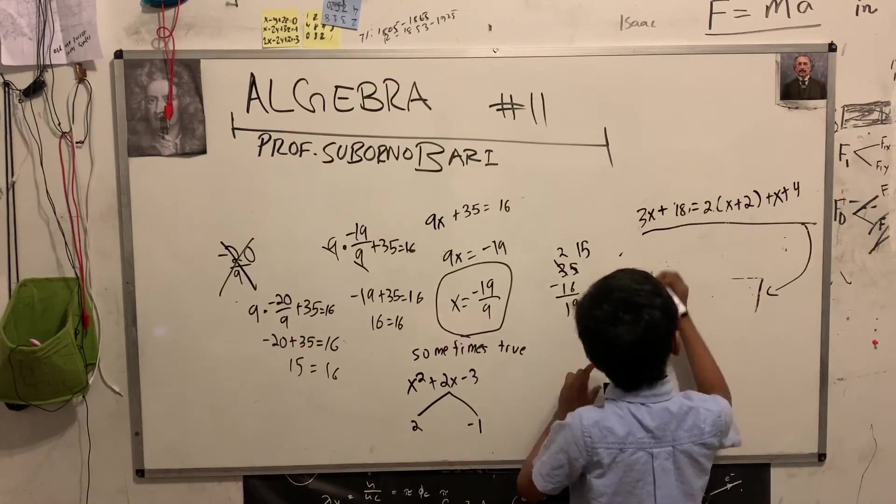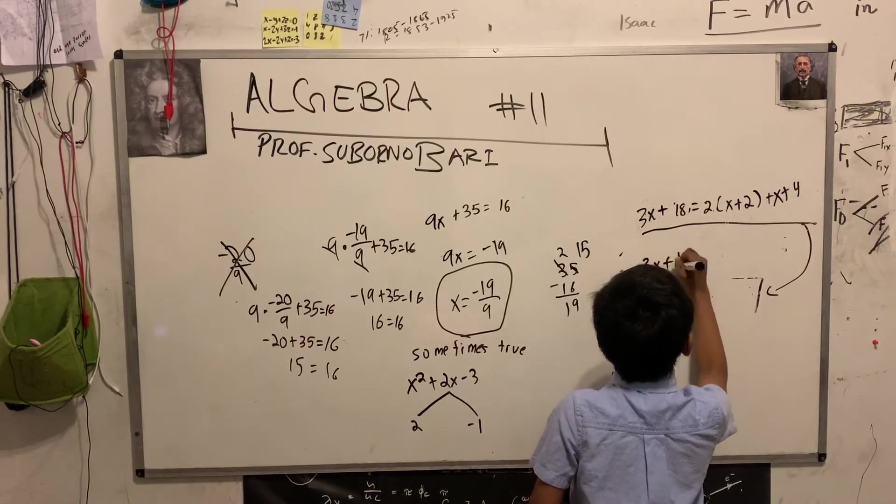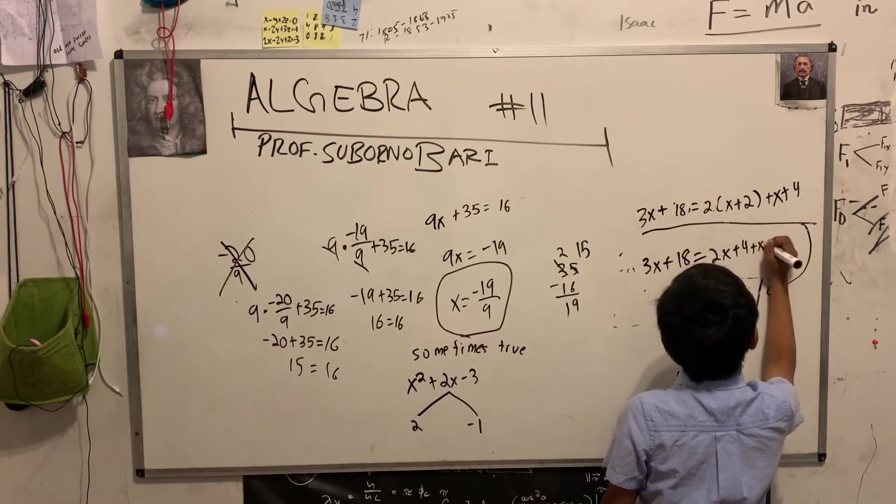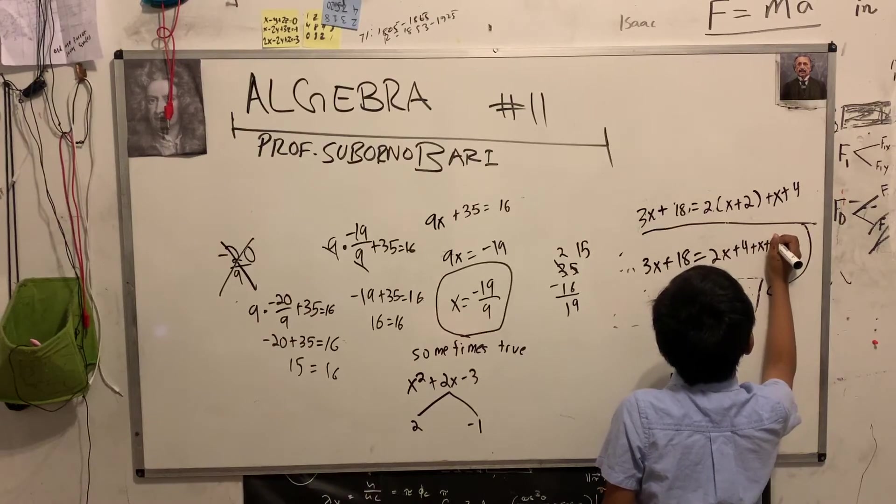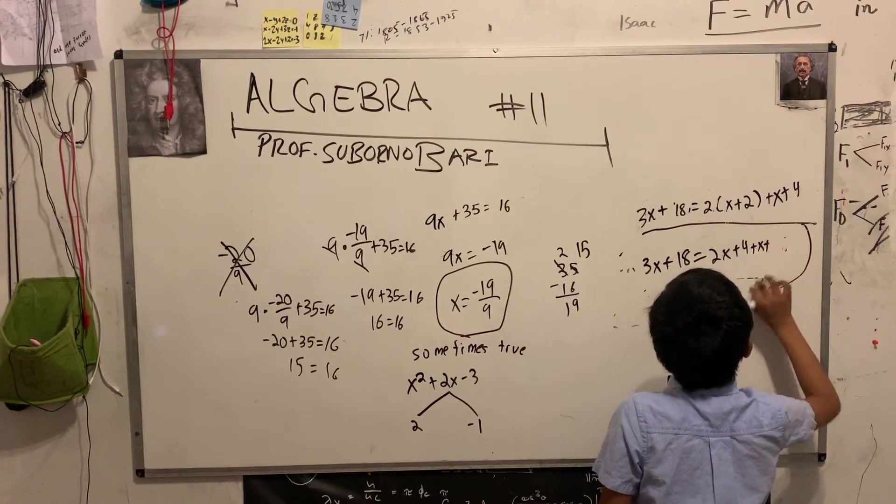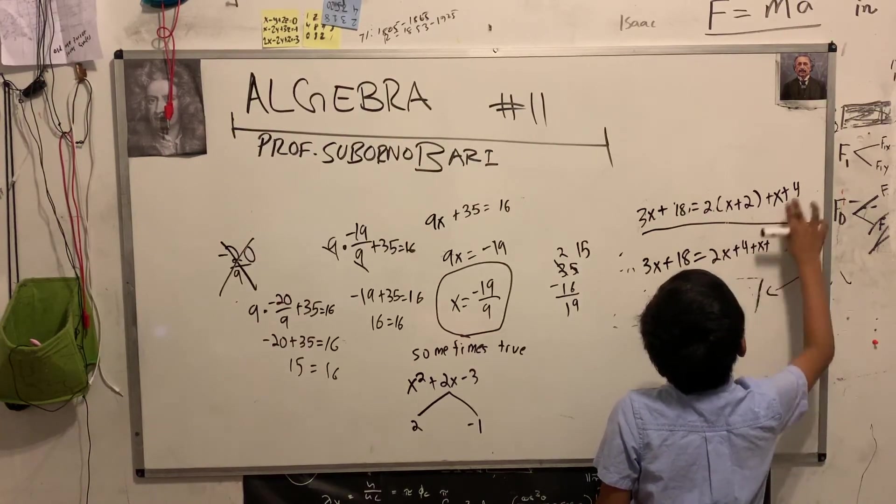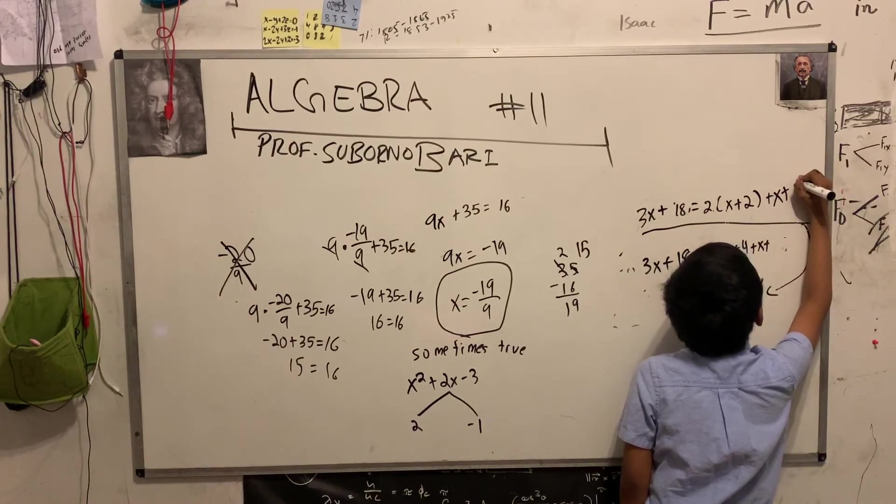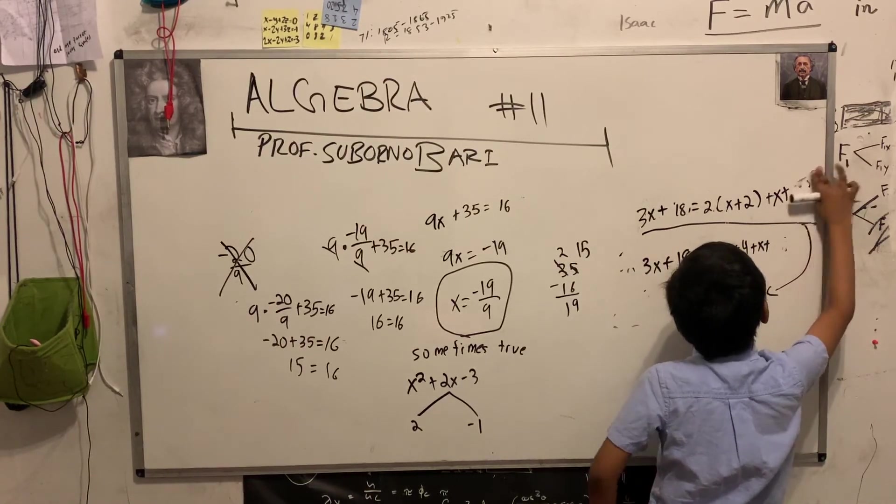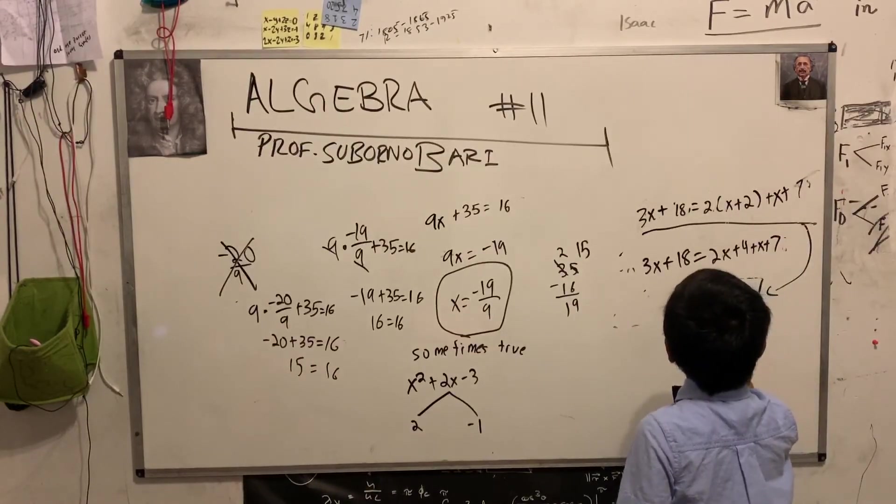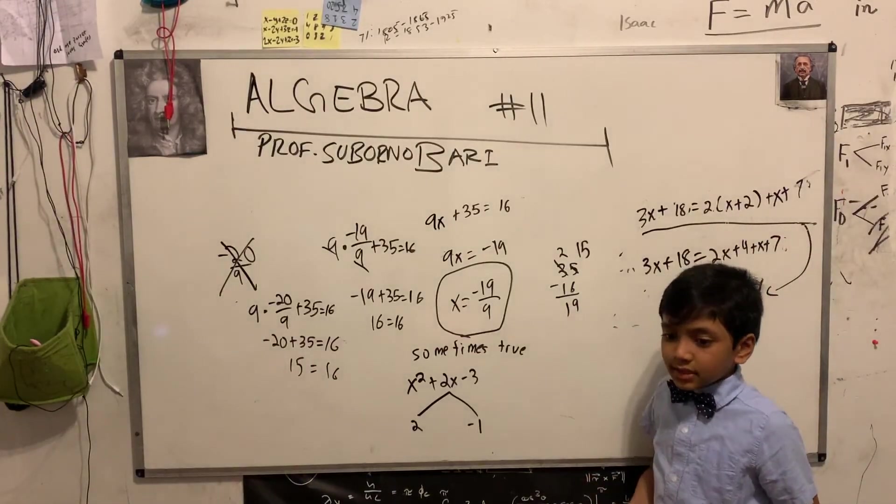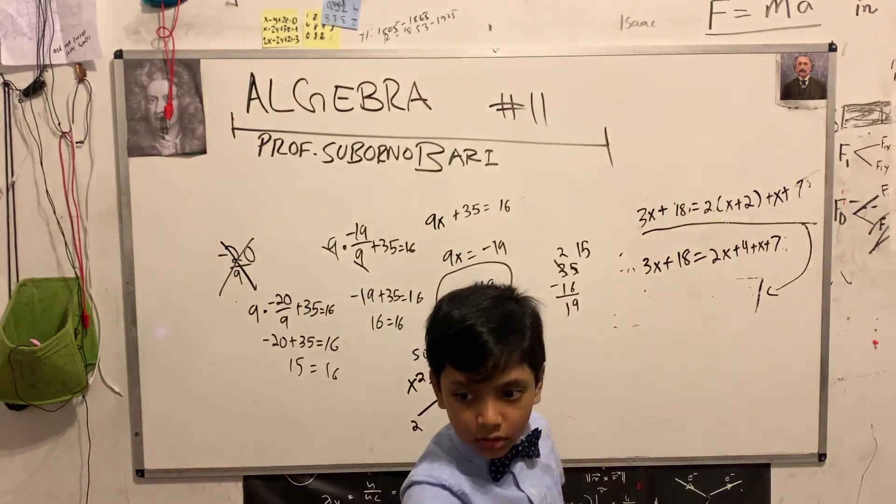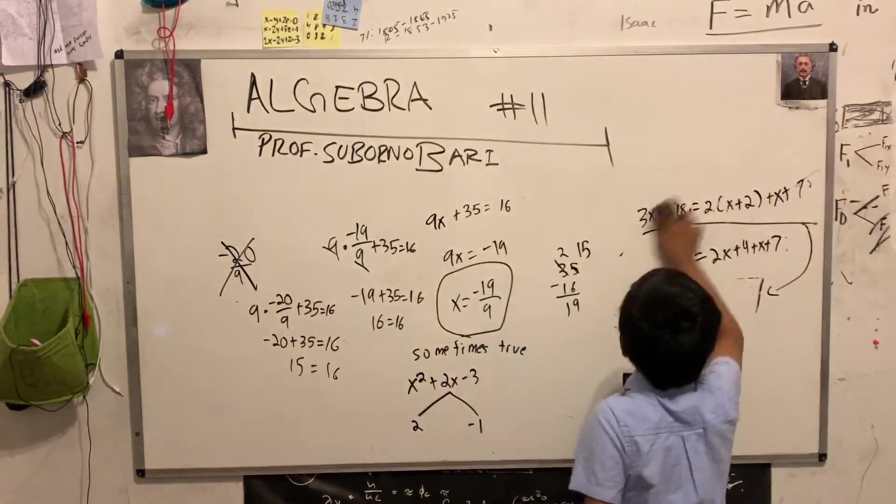3x plus 18 equal to 2x plus 4 plus x plus, wait, wait, what's that, hmm, what did it, so, 7, yeah, 7, it was 7, no, uh, f, but you can see at least, it was simplified down to its core, so, that's all that matters.